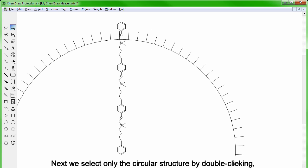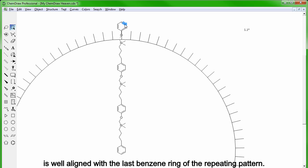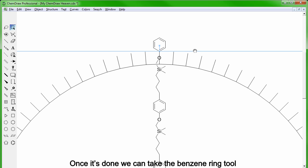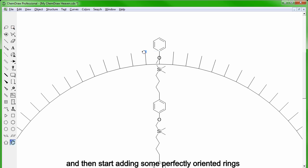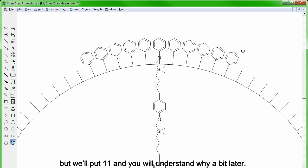Next we select only the circular structure by double-clicking and rotate it so that one of the branches is well aligned with the last benzene ring of the repeating pattern. Once it's done, we can take the benzene ring tool and then start adding perfectly oriented rings that will be on the outer shell of the dendrimer. Normally we would only need 9 of them, but I'm putting 11 of them and you will understand why a bit later.